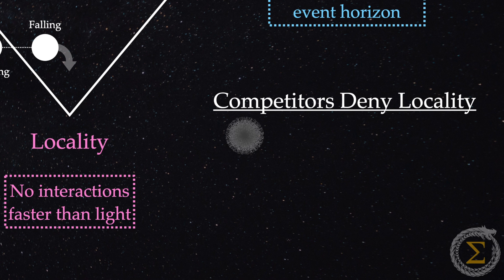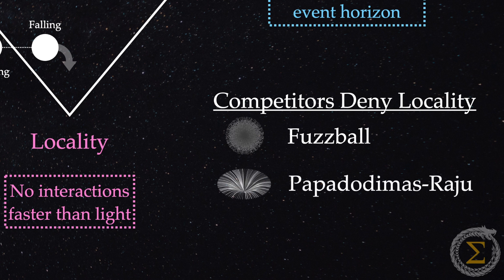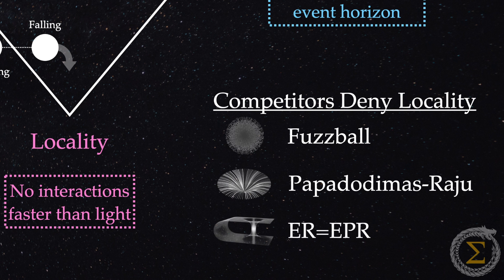All three preserve the equivalence principle and unitarity, but take aim at locality in their own ways. The fuzzball proposal denies locality by suggesting that the event horizon is not a clear boundary, complicating the independence of systems. Papadodimus Raju denies locality by challenging the independence of interior and exterior observers. And the ER equals EPR conjecture denies locality by implying non-local connections through wormholes.